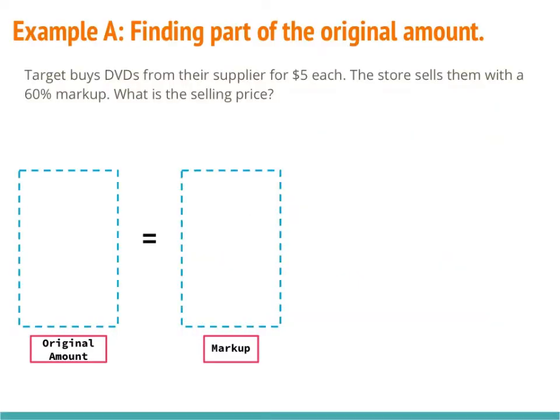Here at example A, it says Target buys DVDs from their suppliers for $5 each, and the store sells them at a 60% markup. What is the selling price? I'm going to use a proportion to solve all the problems today. There is another way — you could multiply by the decimal — but I find the proportion to be easiest, so that's what I'll be using.